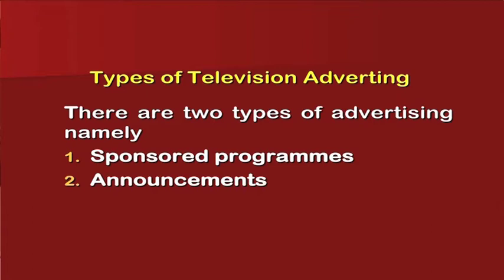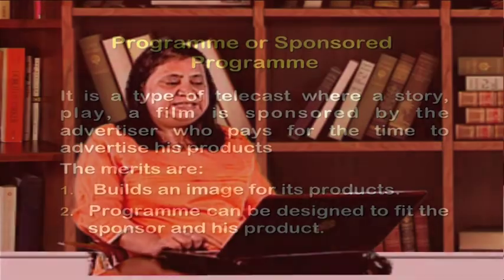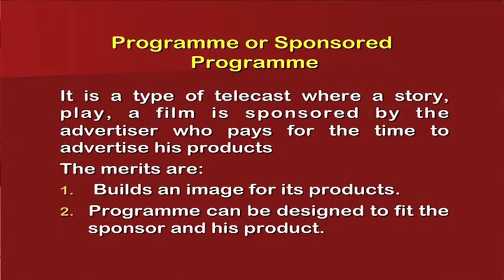There are two types of advertising in television: sponsored programs and announcements. Television is a media industry where space is sold to advertising agencies. According to the power of the advertising agency — how much business they have — they try to buy these spaces. Agencies with a large number of sponsors go for sponsored programs, while agencies with less business go for announcements.